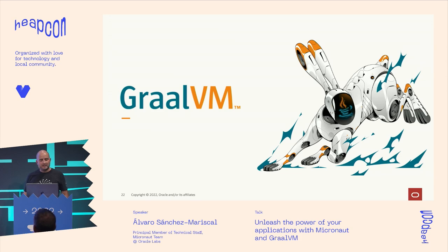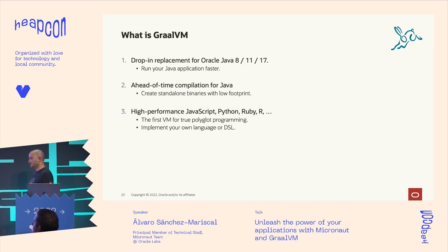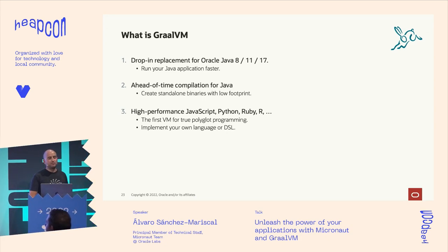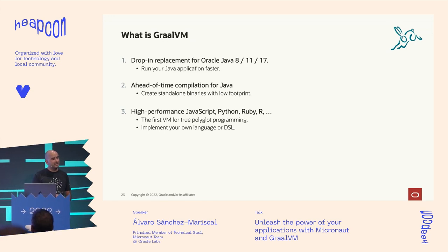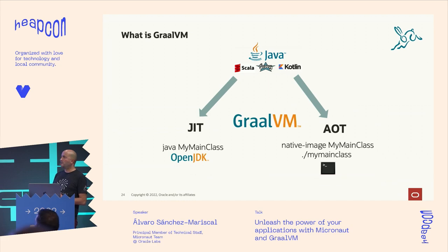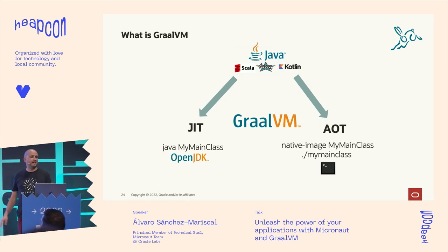Now, GraalVM. Most people think of GraalVM as native image, because that's what most people talk about, but it's more than that. First of all, GraalVM is an OpenJDK distribution — and the GraalVM compiler will merge into OpenJDK soon, so it should be available in other distributions as well. You can take a Java application and use it as a regular OpenJDK in JIT mode.